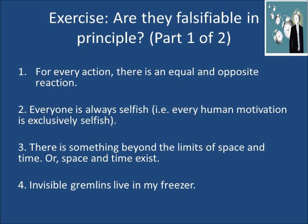Number two says: everyone is always selfish. This is unfalsifiable if you use a certain definition of 'selfish' and make certain assumptions — you can see the video on psychological egoism for an exploration of that. If you believe that everyone is always selfish, just ask yourself what would make that theory false. And if nothing would, well, that's a weakness, not a strength of your theory.